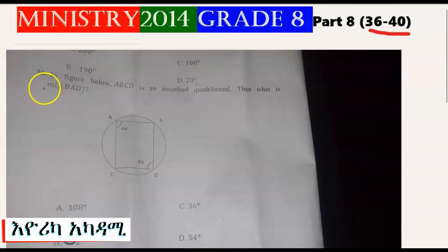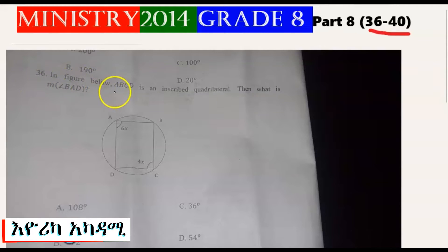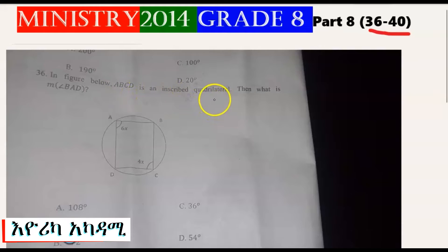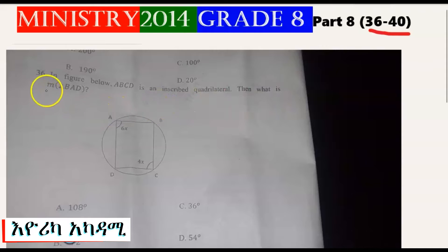Question number 6. In the figure below, ABCD is an inscribed quadrilateral. Then what is the measure of angle BAD?